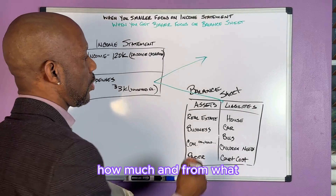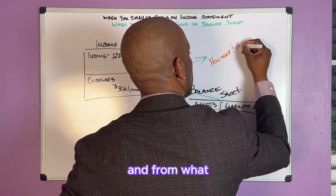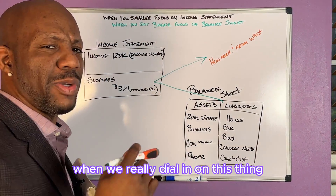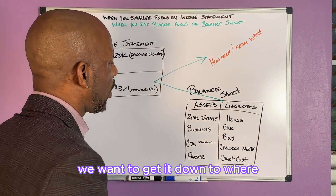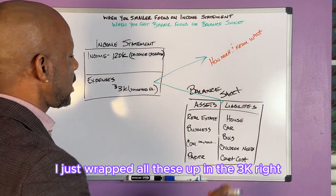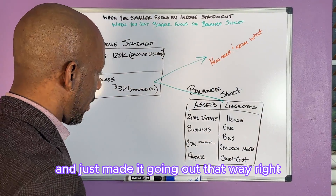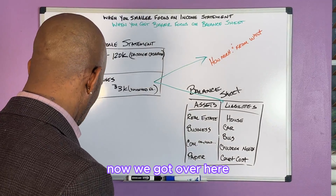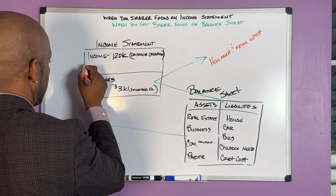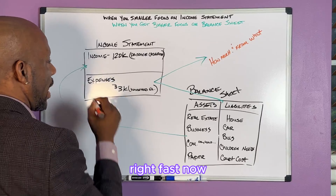So on the income statement we want to dial in: how much and from what? I wrapped all those liabilities up into the 3k going out. Then that flows over to income — it comes over to income fast.